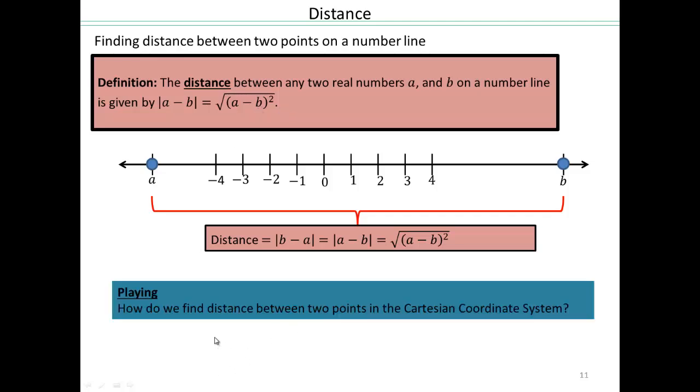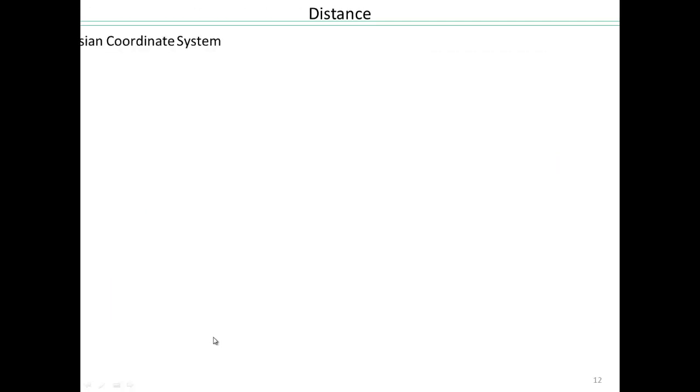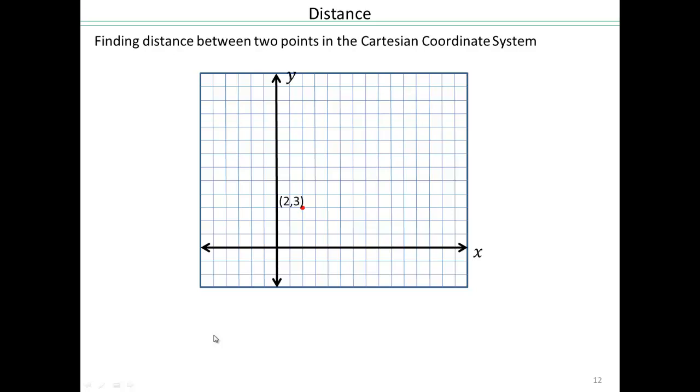So playing would involve how do we extend this to the Cartesian coordinate system. All right, so here we are. Let's put a point 2, 3, and we'll go sideways this much amount, vertically that much amount, to go to the second point, 6, 10. And I want to know how to get distance between 2, 3 and 6, 10. So that would be the length of this red line segment.